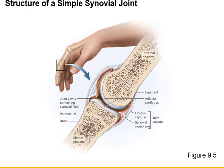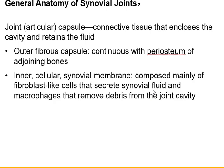Looking at the joint again, you have ligaments holding bone to bone, and inside there's a fibrous capsule that seals the area off so fluid doesn't leak out. On the inside of that fibrous capsule is the synovial membrane, made up of cells that secrete synovial fluid. It also has macrophages — so as you walk and run, any wear debris or dead cells that get into the cavity are cleaned up by the macrophages.